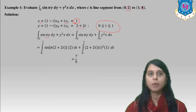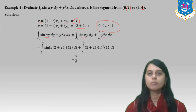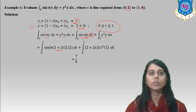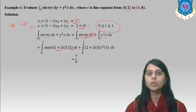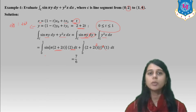Now evaluate the integral over C of sin(πy) + y²x dx. We take the two terms separately. For sin(πy) dy: y = 1 + 3t, dy = 3 dt. For y²x dx: y = 1+3t so y² = (1+3t)², x = 2t, dx = 2 dt. Integrating from 0 to 1 and putting upper minus lower limits, we get the answer 7/6.